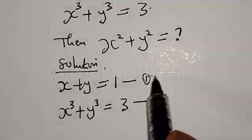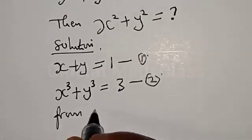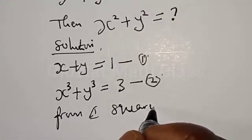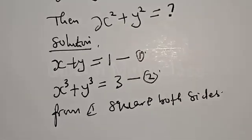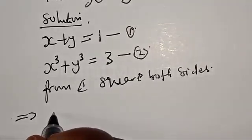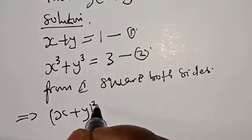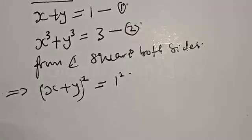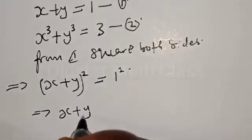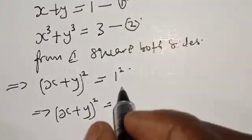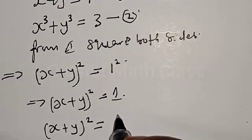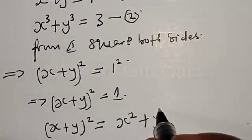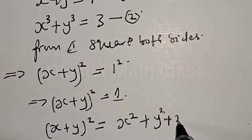From equation 1, let's square both sides. This implies that s plus y all squared equals 1 squared, which equals 1. Recall that s plus y all squared is the same as s squared plus y squared plus 2xy.